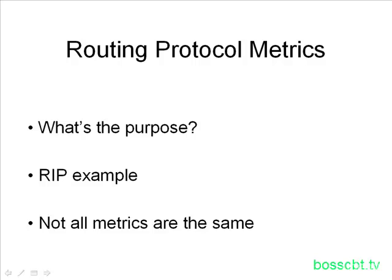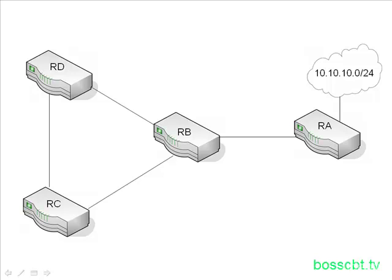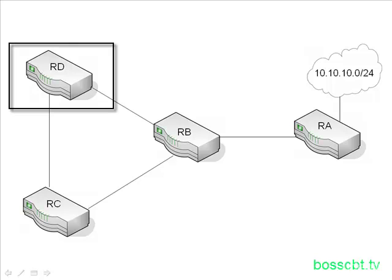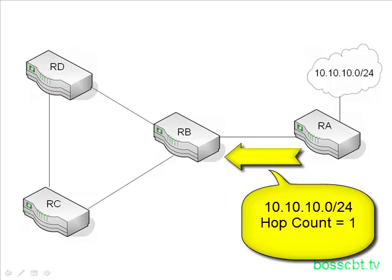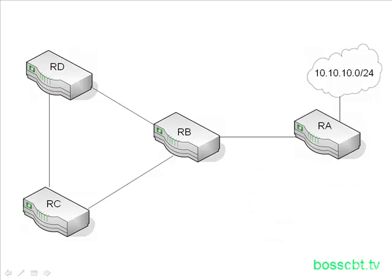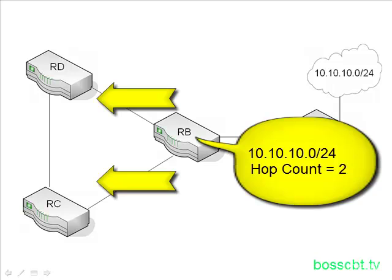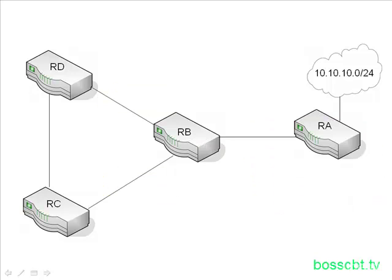Let's take a look at RIP and see how hop count is used. Here's our sample network. RIP is a great example to use because we just learned about how RIP works and how to configure it. We're going to focus on Router D, and specifically it's going to learn about the 10.10.10.0 network which hangs off of Router A. It will learn about it from both Router B and Router C. Router A starts off by sending an update to Router B with a hop count of 1, and then when Router B sends its update out, the 10.10.10.0 network will have a hop count of 2, sending it to both Router D and Router C.